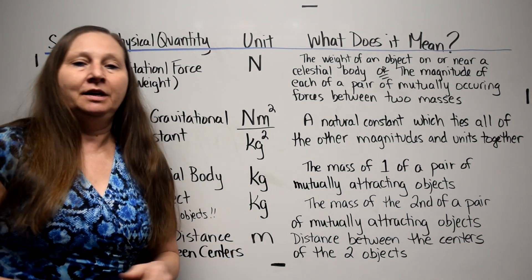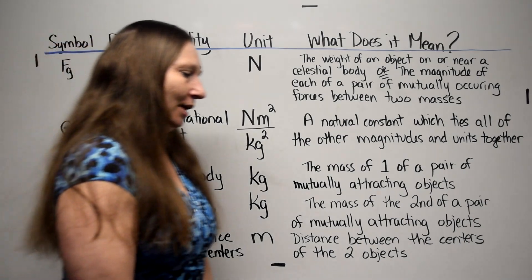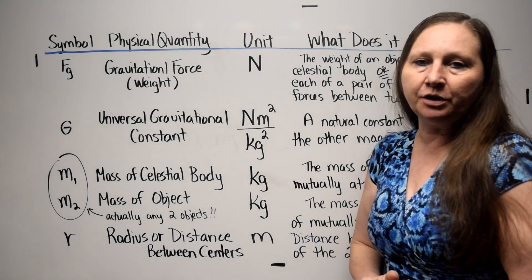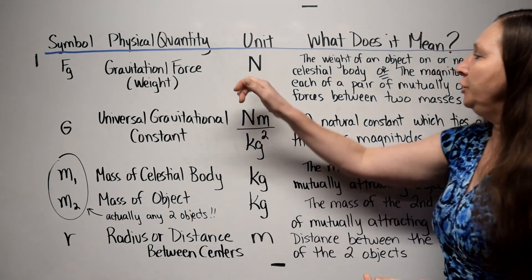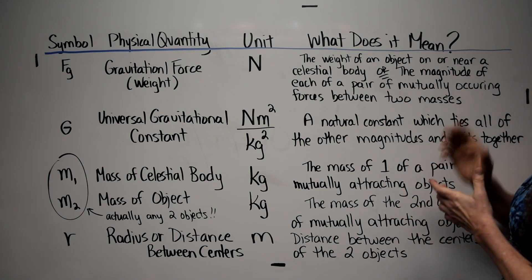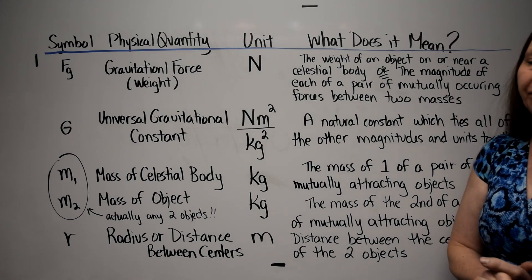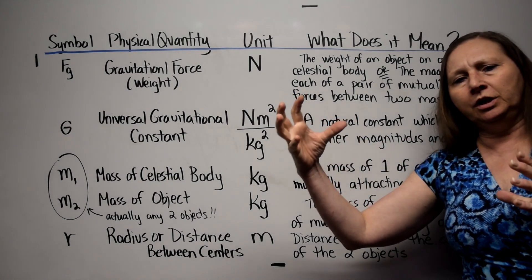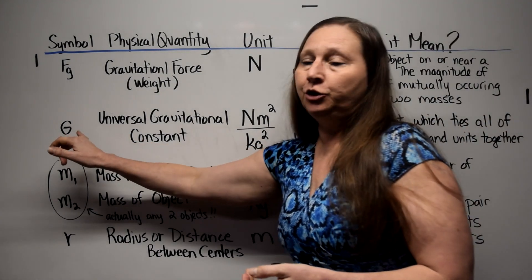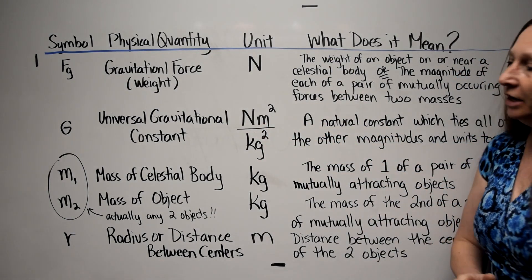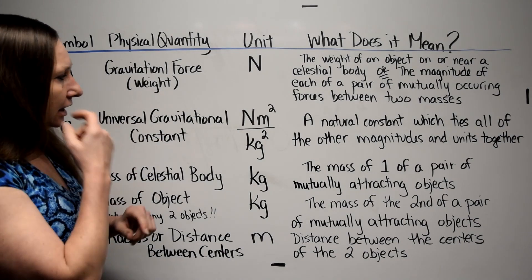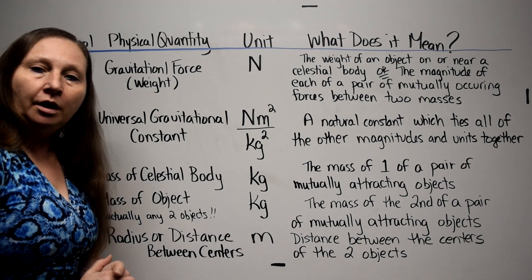What do all of the symbols in the law of universal gravitation mean? Fg means gravitational force. In the case of an object resting on the surface of a celestial body, it would be the weight of the object. The unit is the Newton. Gravitational force either means the weight of an object on or near a celestial body, or the magnitude of each of a pair of mutually occurring forces between two masses — like the Sun attracting the Earth and the Earth attracting the Sun. Capital G, the universal gravitational constant, has units of Newton meter squared per kilogram squared, and is a natural constant that ties together all the other magnitudes and units in the law.